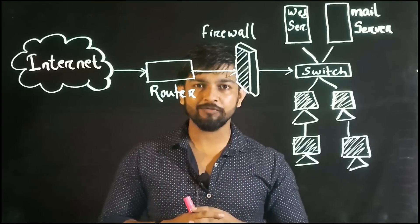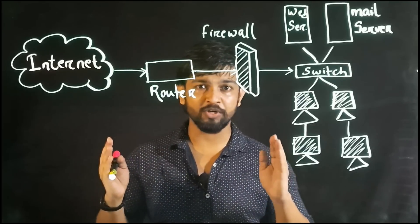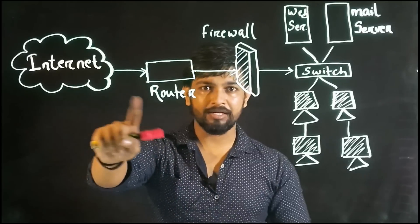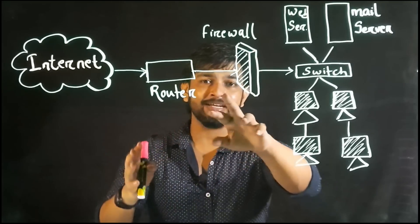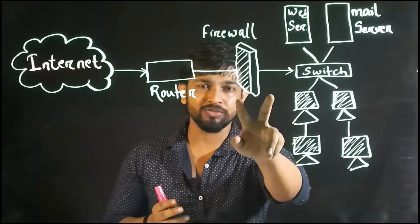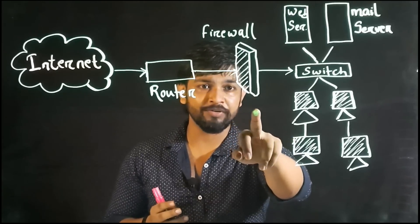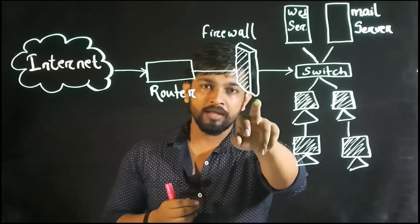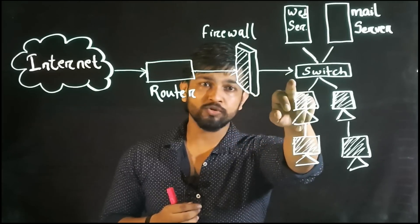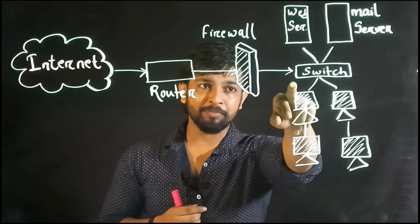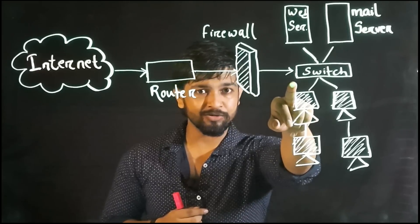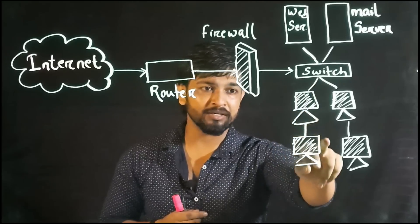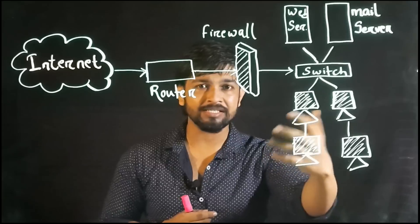Let's understand how data flows from the internet to the systems in your office. From the internet, it is routed through a router and then it goes through a firewall. You might already know the use cases of a firewall — I will be coming up with another video on that. Then after the firewall, it goes to the switch inside the company, which might be an L1 or L2 switch, and they route it to the LANs — different systems like computers or mobile devices.